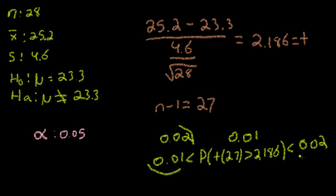Therefore, multiplying this by 2 and this by 2, we would get 0.02, which is less than the probability of t being greater than 2.186, which is less than 0.04. And now this here would be our final answer almost.